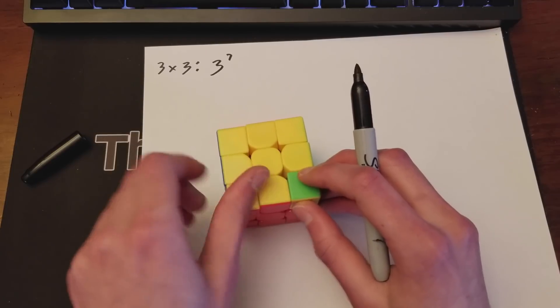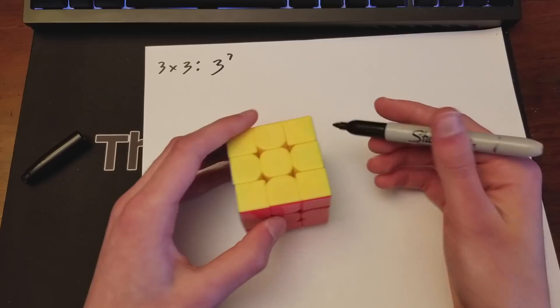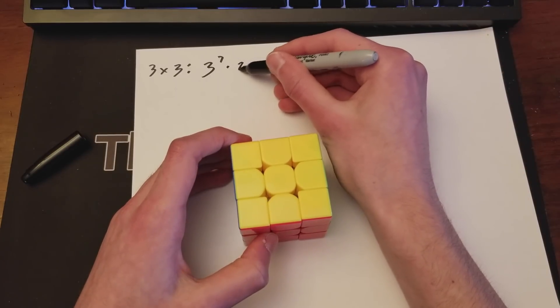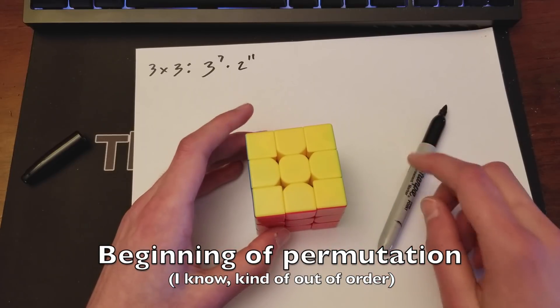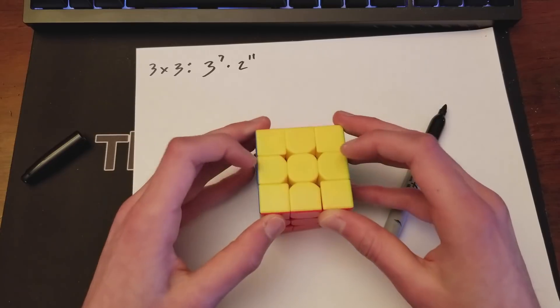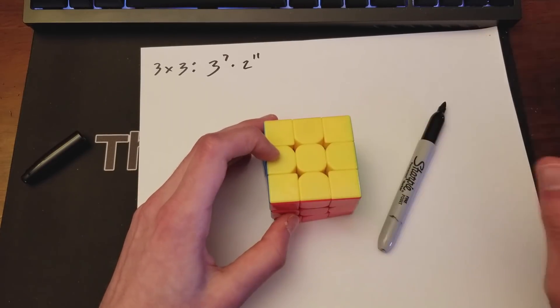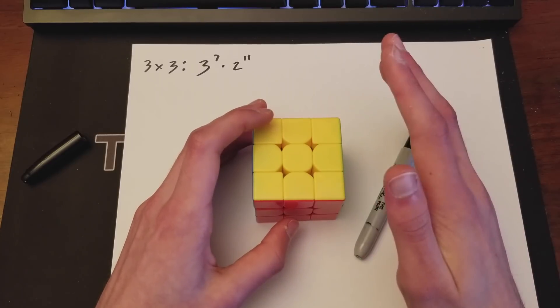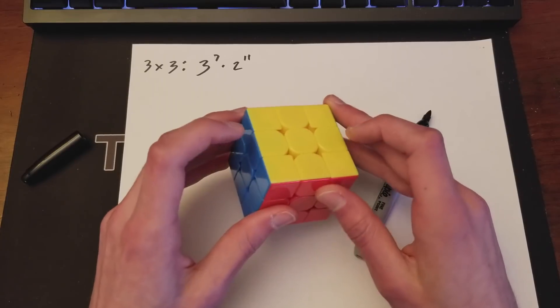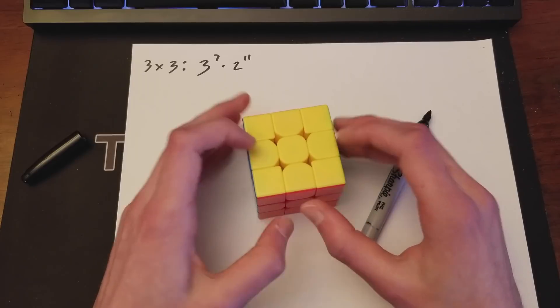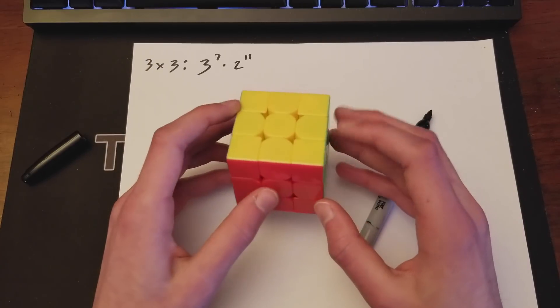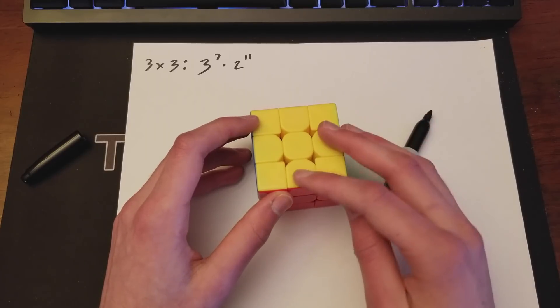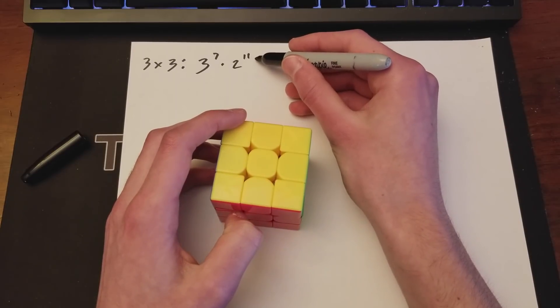So basically, for example, let's say you have two different twisted corners. Let's say this one is fixed. So that means that there is only one possible position for the other corner. So basically, you have one option. So that leaves us with three to the seventh for the seven corners. And then edges, same principle. You've got 12 of them.